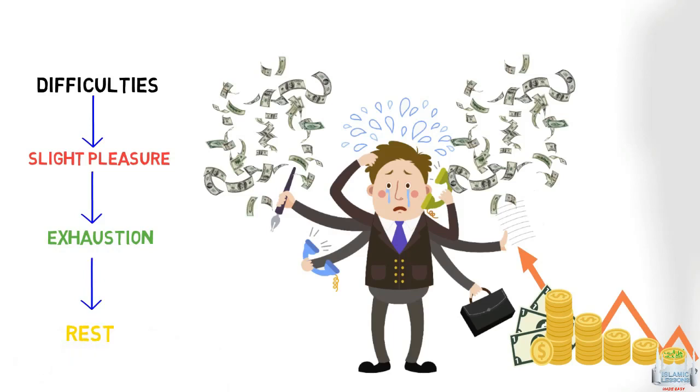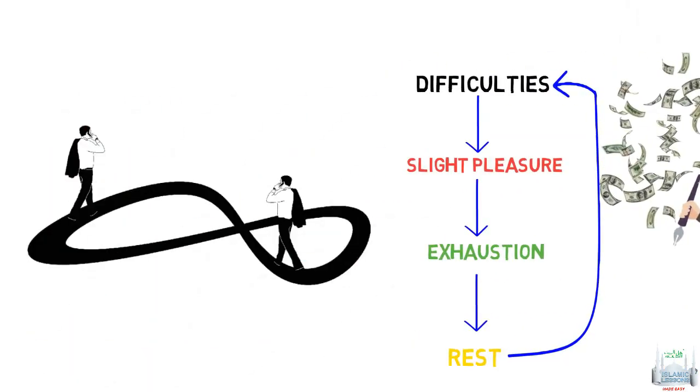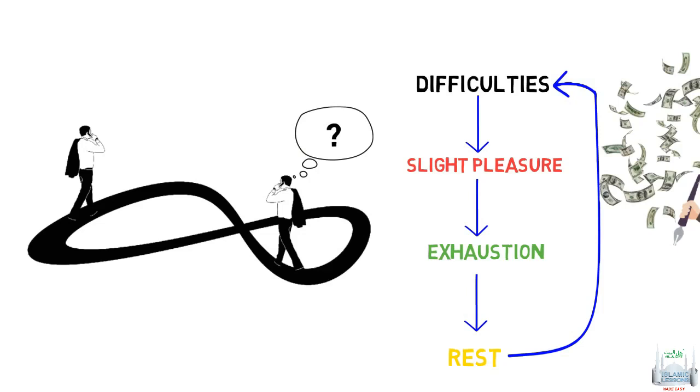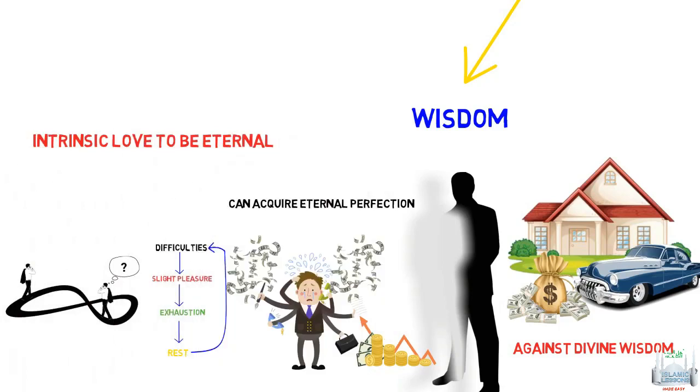Then being exhausted requires rest to regain strength and then the repetition begins again with trial and tribulations never ending. This becomes a vicious circle and if this is all there is in life, then it goes against our intellect. Our intellect itself will say it can't be just that. Man has been given intrinsic love to be eternal from his creator.